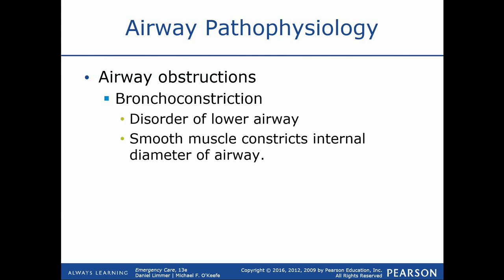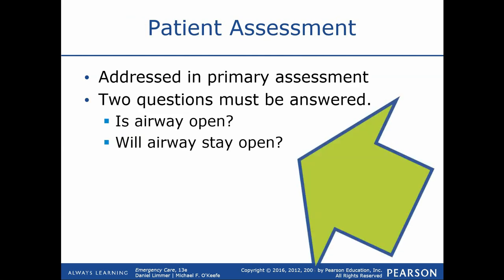Bronchoconstriction — breaking down the word: broncho meaning bronchioles, constriction meaning narrowing — is a narrowing of the lower airway passages. It can result from asthma, allergic reaction, or other causes. We need to understand the underlying problem, not just treat the symptoms. If someone has bronchoconstriction and we hear wheezing, I can administer albuterol to help open the bronchioles. But if I'm not treating the underlying cause — such as epinephrine for an allergic reaction — I'm not being very effective.